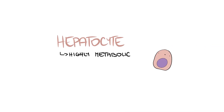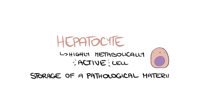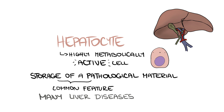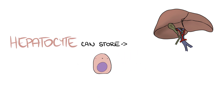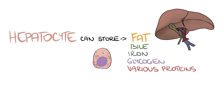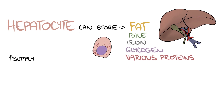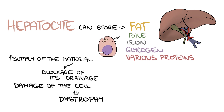The hepatocyte is a highly metabolically active cell. Storage of pathological material is therefore a common feature of many liver diseases. Hepatocytes can store miscellaneous substances such as fat, bile, iron, glycogen, or various proteins. The reason can be an increased supply of the material, blockage of its drainage, or damage of the cell itself, leading to cell dystrophy.